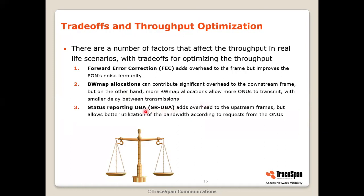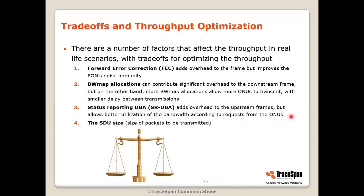Status monitoring DBA is a mechanism that allows the OLT to assess how much each of the ONUs requires and utilize the time slot allocations accordingly. Again, it adds some overhead to the upstream, but you pay with this overhead to get better utilization of the bandwidth according to the actual requests of the ONUs. And last but not least is the SDU size — the size of the packets to be transmitted. Let's talk about this last point a little bit more.